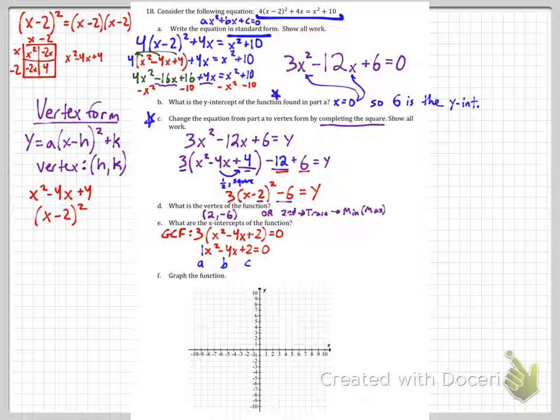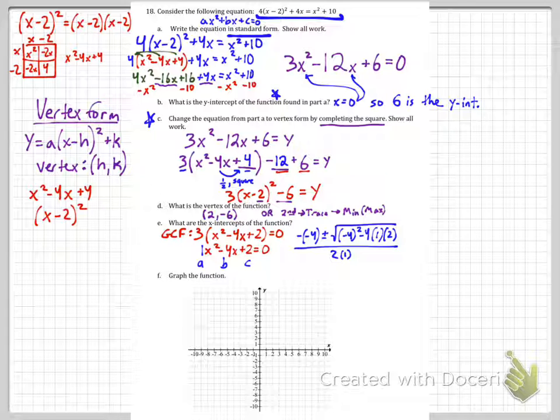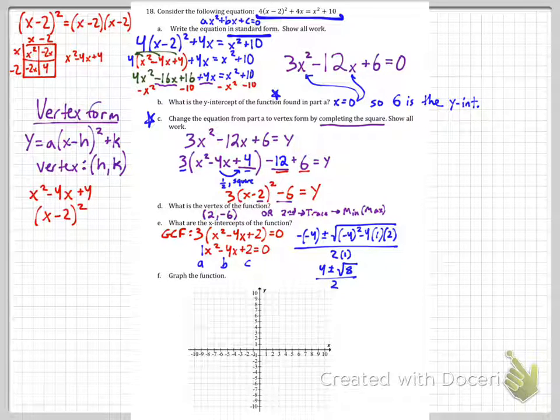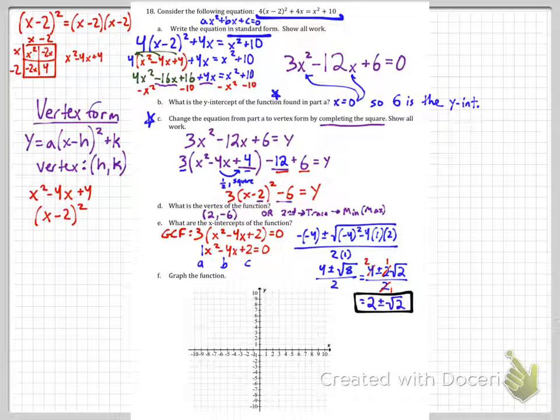So we get -(-4) ± √((-4)² - 4(1)(2)) all over 2(1). And you get 4 ± √8 over 2. The square root of 8 can be simplified into 2√2, because there's a perfect square in there, the perfect square is 4. And once you have that, you need to divide out the 2 from each of those terms, and you get 2 ± √2. You have to use the quadratic formula in order to get the exact zeros. If you just graph it, you'll get decimals that are not exact.